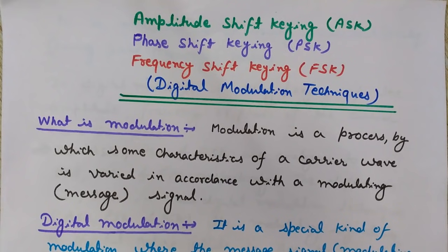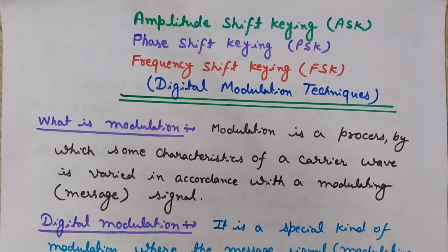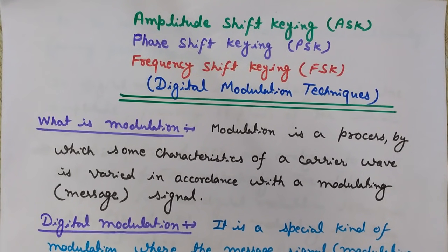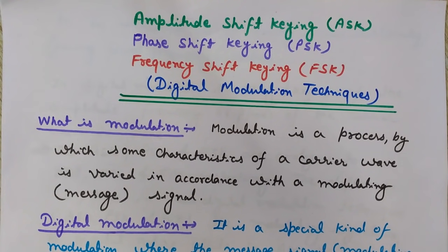Modulation is a process by which some characteristic of a carrier wave is varied in accordance with a modulating, also known as messenger or baseband, signal. In modulation, we have a high-frequency carrier wave and we change either the frequency, phase, or amplitude of this carrier wave according to the instantaneous variations of the message signal. If the amplitude is varied it is amplitude modulation; if frequency or phase is varied, it is frequency or phase modulation.